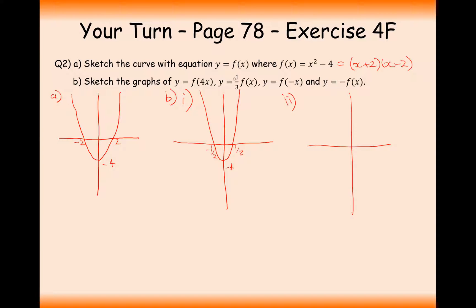For y equals one third of f of x, the transformation is outside the bracket — vertical movement. It's a factor of a third, so we're going to squish the graph inwards vertically. The minus 4 becomes minus 4 thirds. The minus 2 and 2 remain where they are. So we draw a roughly squished-in shape graph to compare, with all y-coordinates thirded.